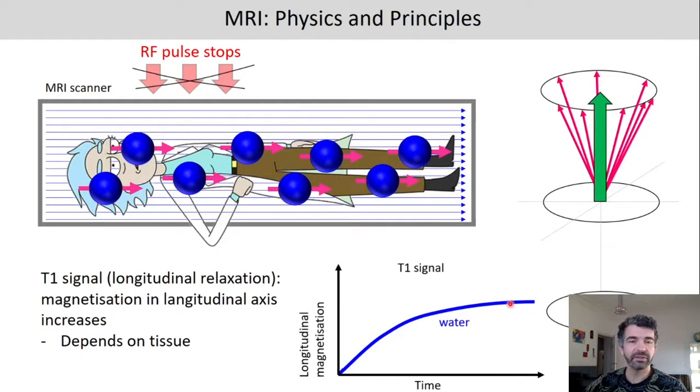Interestingly, this function is different for different materials. So for fat tissue, for example, it has a different longitudinal relaxation function. And this means we can differentiate between water and fat tissue.